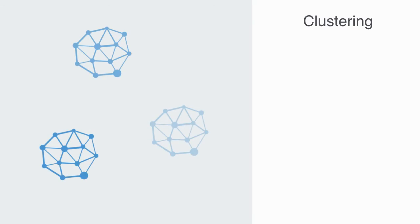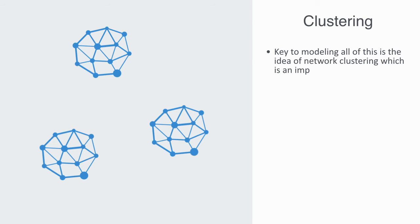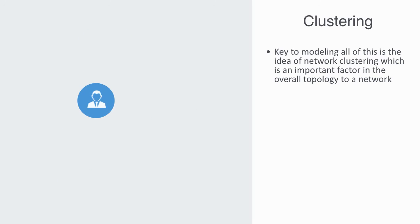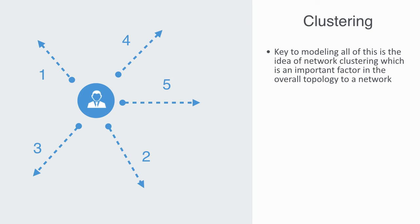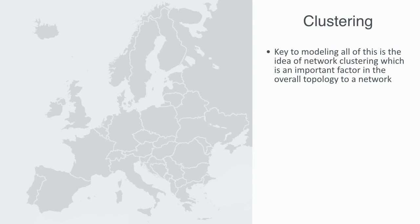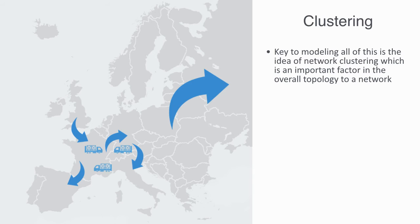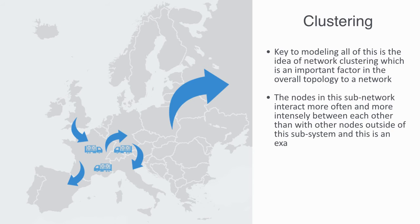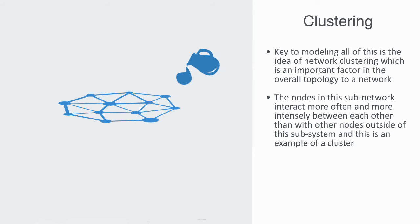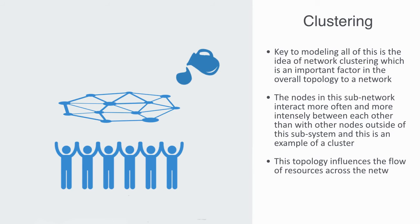This will give us a heterogeneous topology to the network that will significantly influence how something flows across it and how quickly or slowly resources in the global network will permeate into any specific subset. Key to modeling all of this is the idea of network clustering, which is an important factor in the overall topology of a network. When an agent comes to make a connection, the costs and benefits of connecting to different nodes will typically not be evenly distributed. For example, because of the regulatory framework, trade between countries within Europe is easier than a country trading with another country outside of Europe.